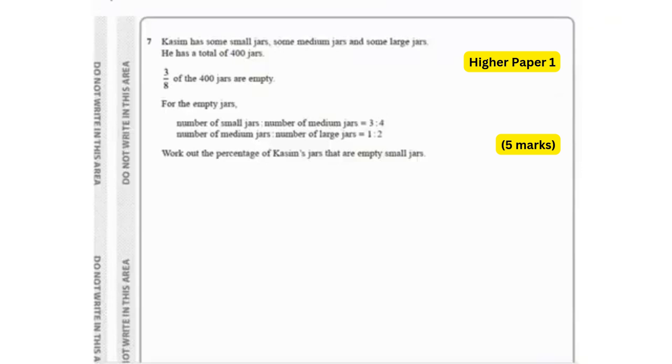The next question says Qasim has some small jars, some medium jars and some large jars. Here's a total of 400 jars. 3/8 of the 400 jars are empty. For the empty jars, number of small jars to number of medium jars is 3 to 4 and the number of medium jars to number of large jars is 1 to 2. Work out the percentage of Qasim's jars that are empty small jars. So first, let's find out the empty jars. That's going to be 3/8 of 400, which is going to give us 150.